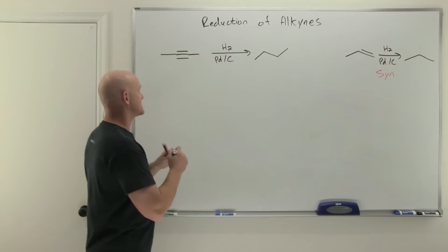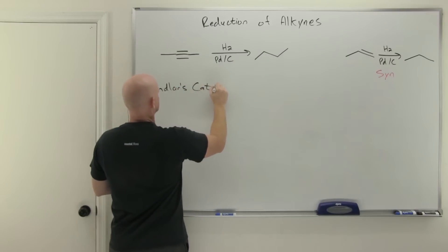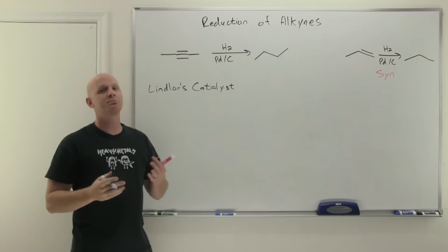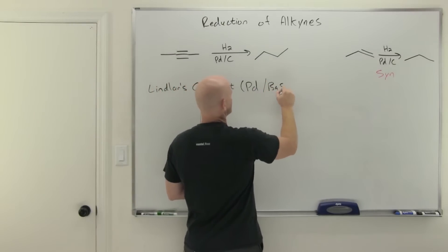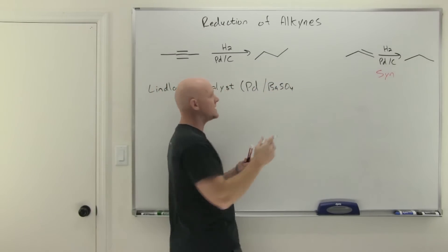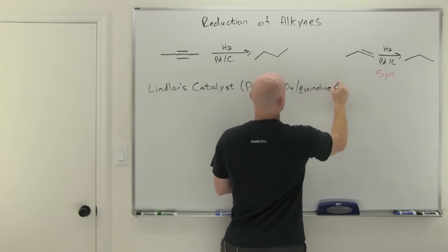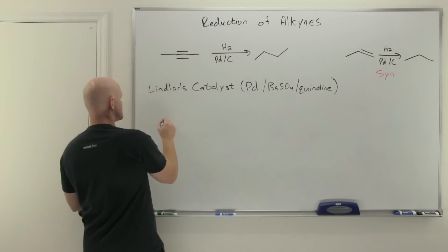Here we're going to use what's called Lindlar's catalyst. Lindlar's catalyst is the most common example of what we call a poisoned catalyst. We take our palladium—same palladium we're using up here—but we're going to add some barium sulfate to it, some people use calcium carbonate, and some quinoline onto it. These are going to decrease the reactivity of that catalyst.